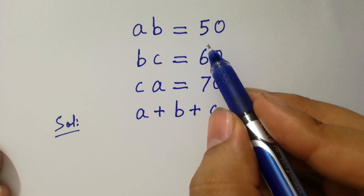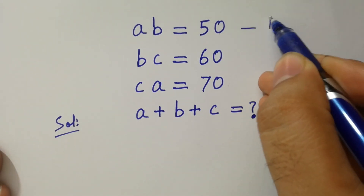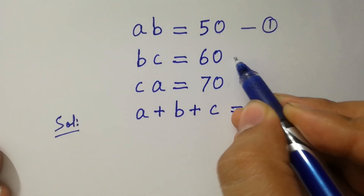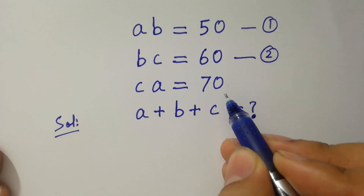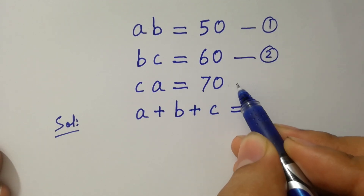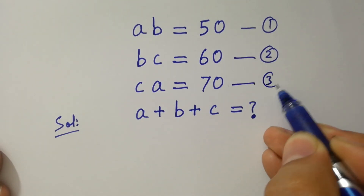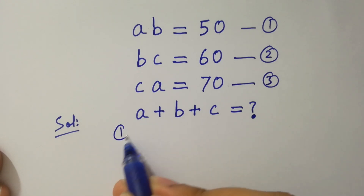Let ab equal to 50 be the first equation, bc equal to 60 be the second equation, and ca equal to 70 be the third equation.